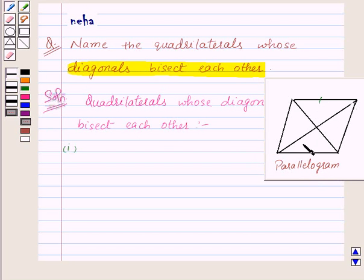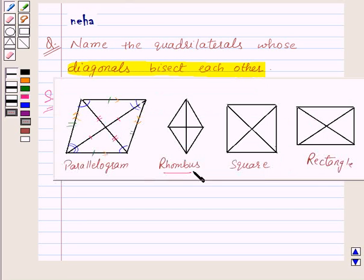They are parallel as well. Also, opposite angles are equal and the diagonals bisect each other. So that means the first quadrilateral whose diagonals bisect each other is a parallelogram. Now we know that a rhombus, a square, and a rectangle are all parallelograms.